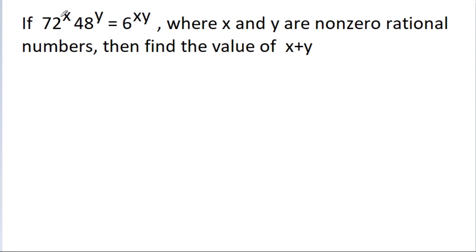We have been given that 72 power x into 48 power y is equal to 6 power xy, where x and y are non-zero rational numbers. We have to find the value of x plus y.